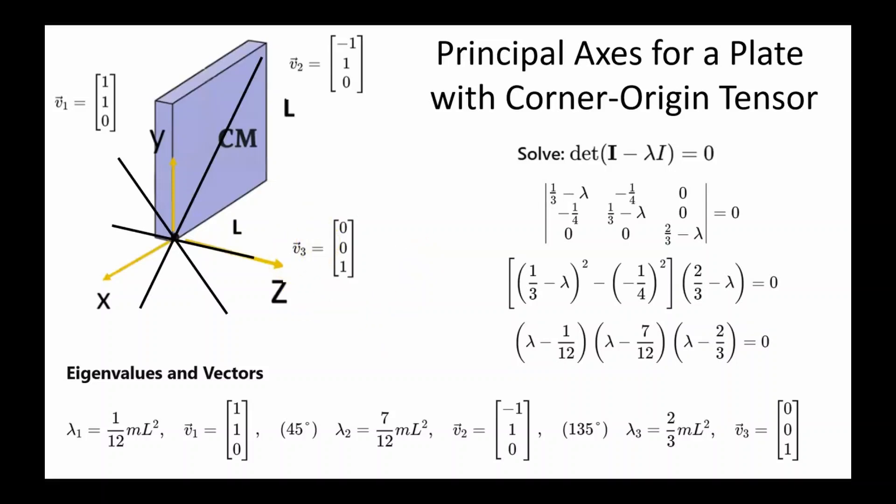The axis along v2 divides the square into two symmetric halves which is why it's a principal axis. You'll notice the other directions don't create this kind of symmetry unless the origin is placed at the center of mass. That's one of the main reasons why it's more natural and useful to put the coordinate origin at the center of mass.